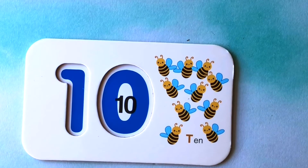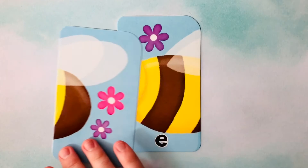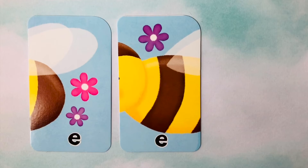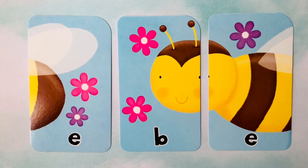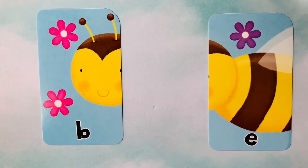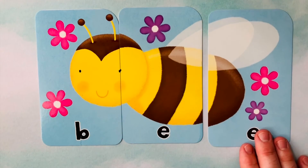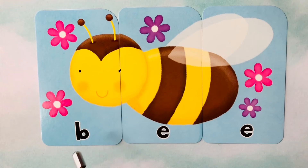Awesome job, everybody. Let's learn how to spell words. Looks like we're starting with an E. We also have another E. And our third letter is a B. I think we're going to spell bee. B starts with a B, follows with an E, and finishes with another E. B-E-E spells bee.